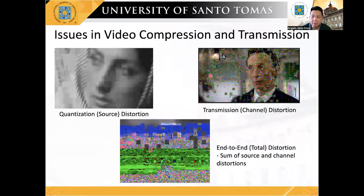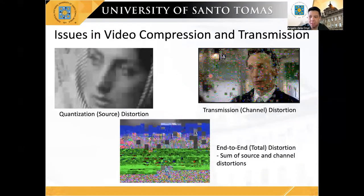However, video information is inherently hard to transmit over a limited bandwidth and error-prone channel. Various video artifacts are present in typical video signals, namely quantization or source distortion, which occurs at the source or at the video encoder, regardless of the channel conditions.